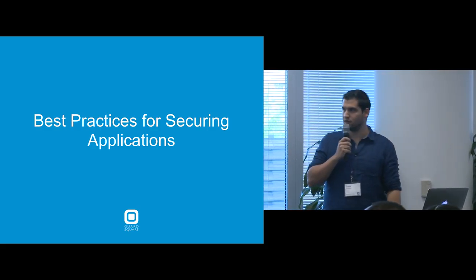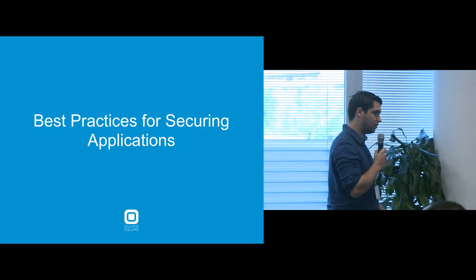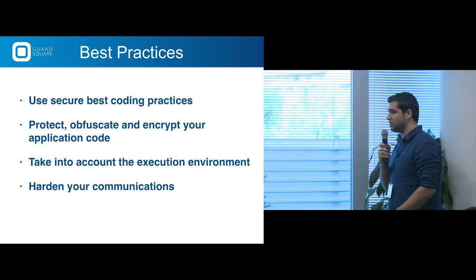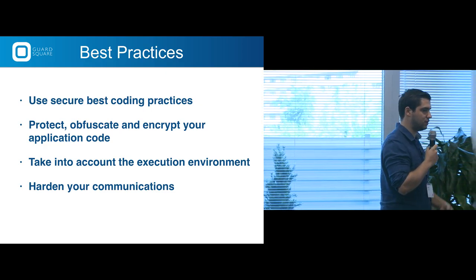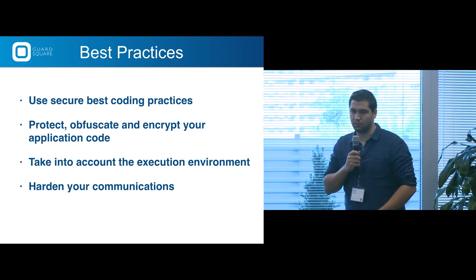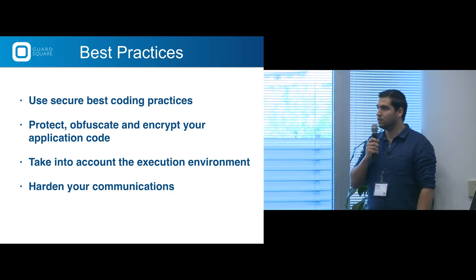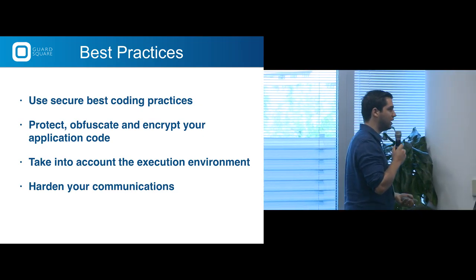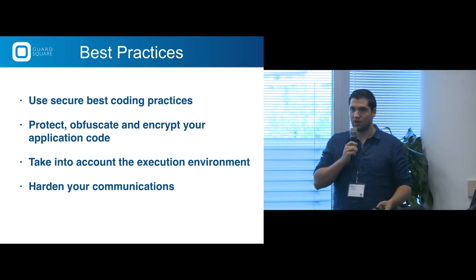So now that we have some tools, how can you secure your applications better? It's important to use secure best coding practices — there are a lot of things you can do wrong with security-sensitive code. You can protect, obfuscate, and encrypt your application code. Take into account the execution environment — is the app running in a secure environment, how can I check that, and how should you react? And you can harden your communications.